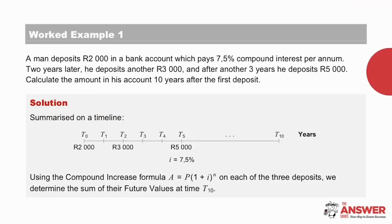Let's take a look at our first example here. We have a man who deposits R2000 into a bank account. The interest rate is 7.5% compound interest per annum. Two years later he deposits another R3000 and after another three years he deposits R5000. We have been asked to calculate how much is in his account 10 years after his first deposit. Now that is quite a lot of information in those three lines, but it can easily be summarized on a timeline. First, the thing is to note that we are working in years. So we show that at the initial phase at T0, R2000 is deposited.